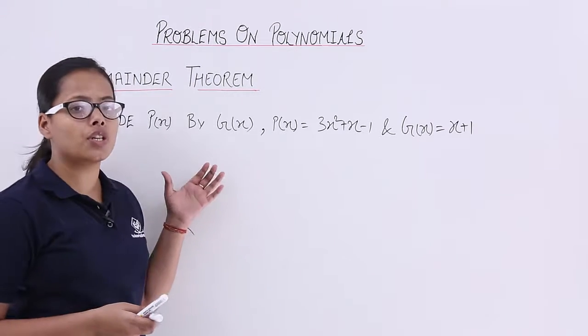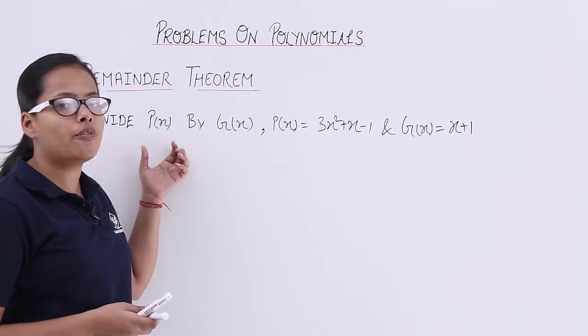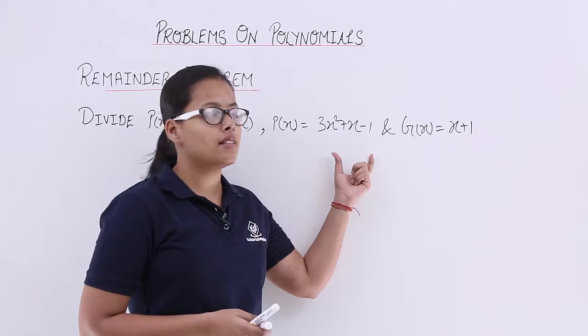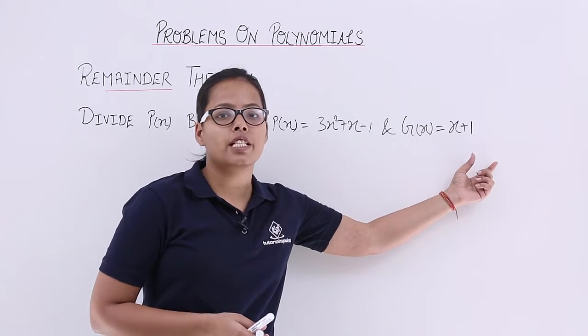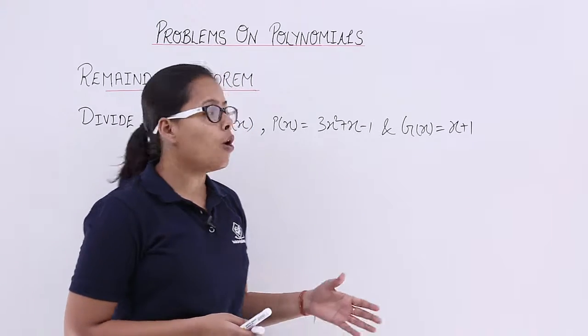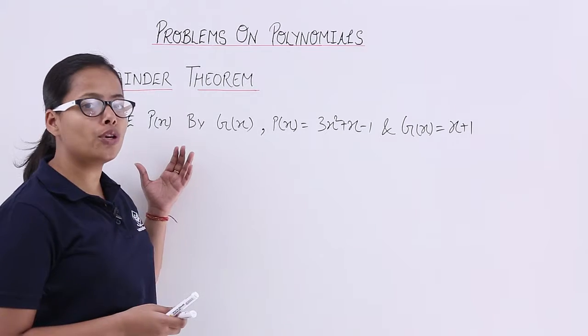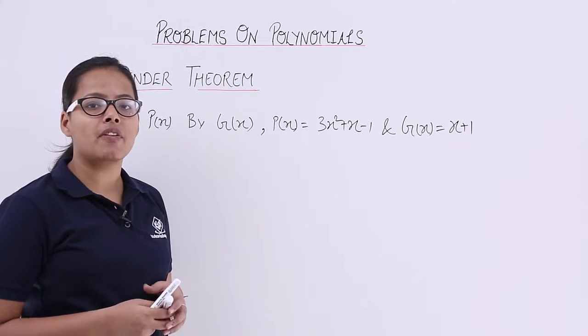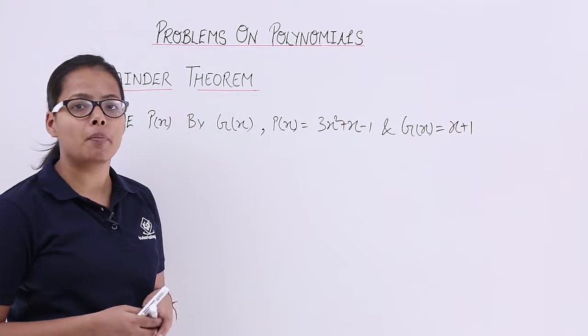What is our question? It is divide P(x) by g(x), where the value for P(x) is 3x²+x-1 and the value for g(x) is x+1. You have to divide P(x) by g(x). Let's start dividing it and see what will be the remainder.